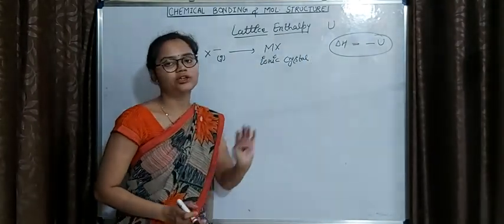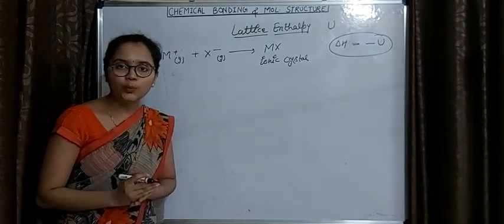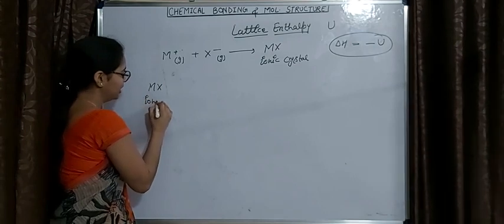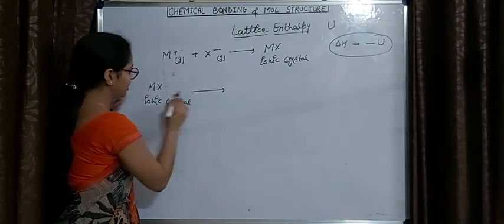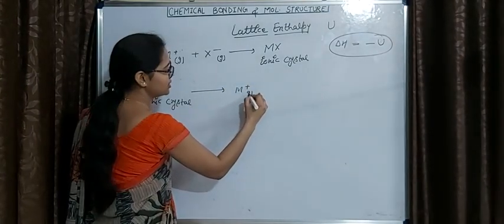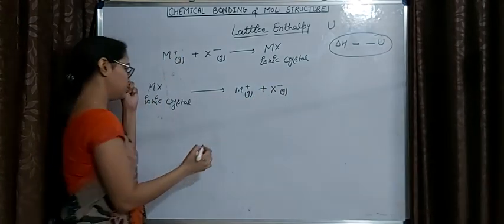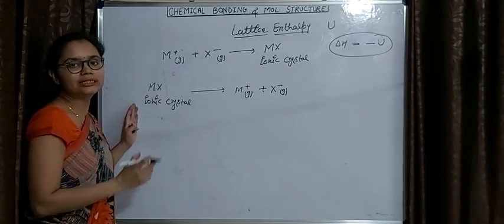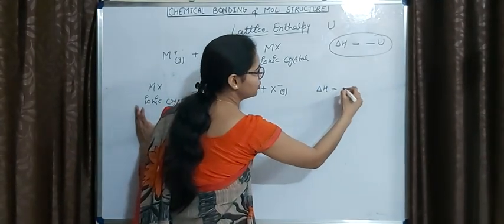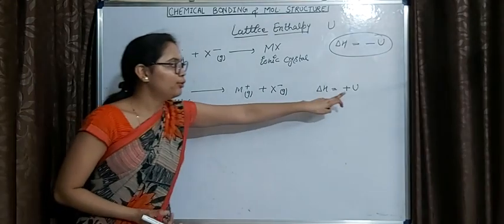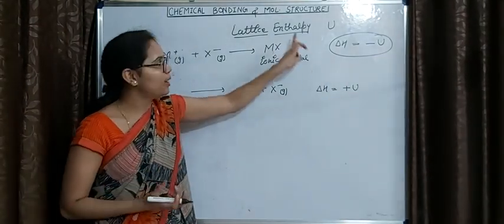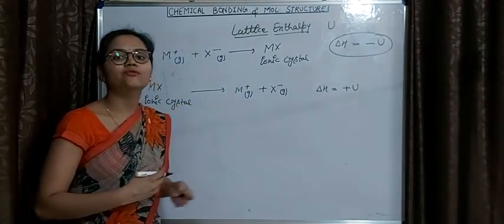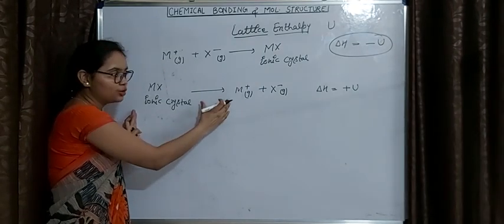Now suppose we want to break this one mole of ionic crystal. In that case we have to provide some energy, and it will change into M⁺ gaseous and X⁻ gaseous. The energy needed to break one mole of ionic crystal is numerically equal to the lattice enthalpy. We write delta H equals plus U, with a positive sign because energy is absorbed in this process.